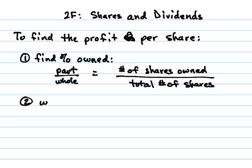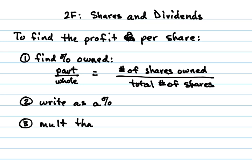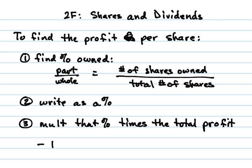Once you find that, make sure you write it as a percent — simply multiply by 100 and put the percent symbol in. To change it the other way, you divide by 100. Then what you're going to do is multiply that percent times the total profit, and that amount is your share. That's where the idea of shares comes from — you're sharing the profit and the risk with others.